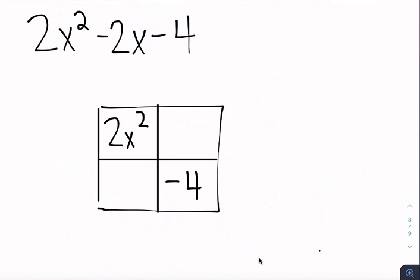Okay, we talked about how when we take the products of those two they will always be the same. So negative 4 times 2x squared is negative 8x squared. So whatever this is right here also has to have a product of negative 8x squared. So I use that and those diamond problems that we've been practicing.